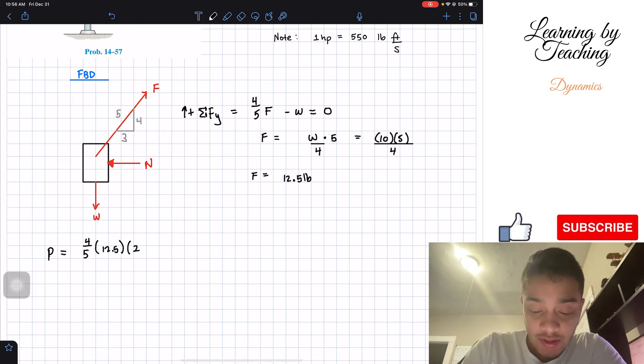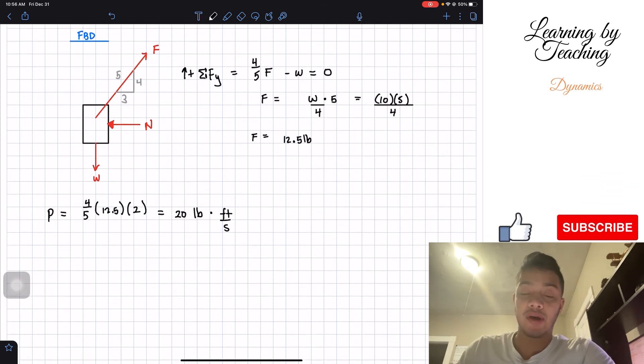So this is our force, and we need to multiply it by the velocity. The velocity is given as 2. So we plug these values into our calculator, and we get that this gives me a total of 20 pounds times feet per second.